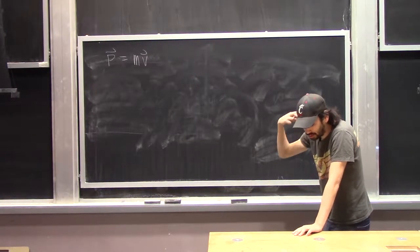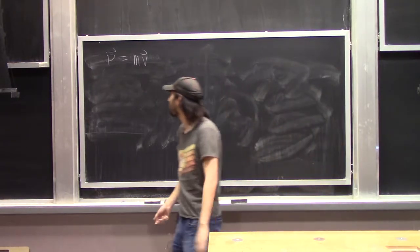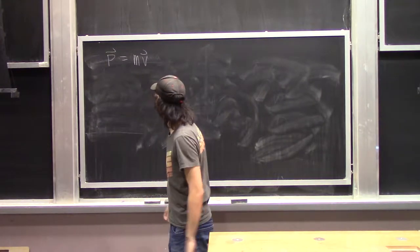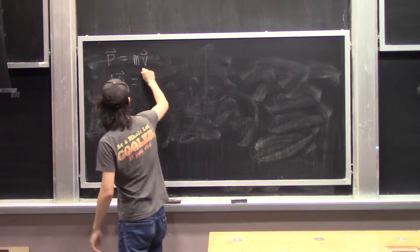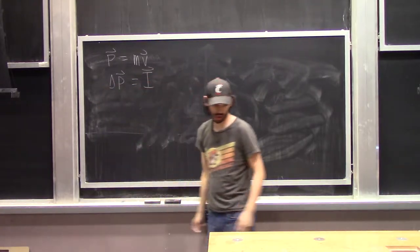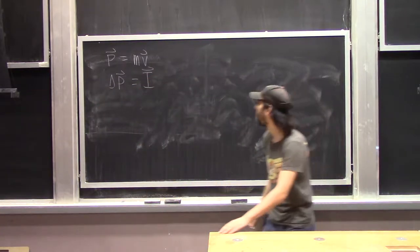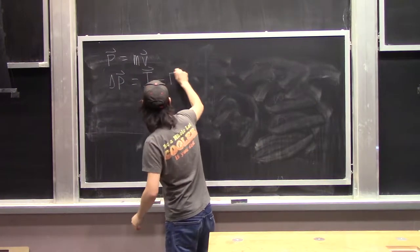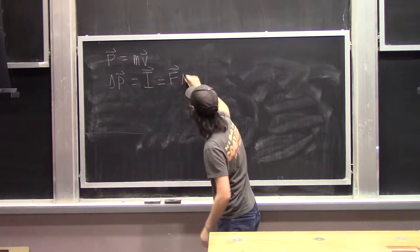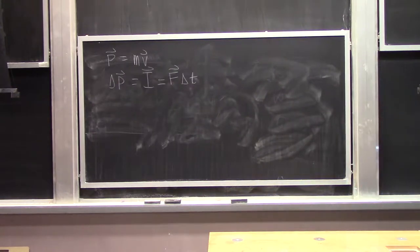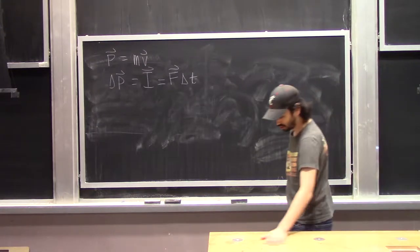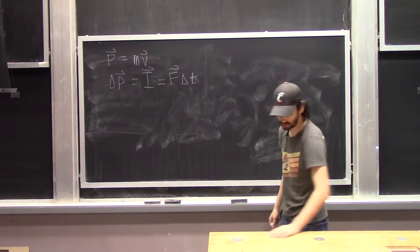An object can acquire momentum if a force is applied to it. The change in momentum, which is defined as the impulse and given the letter capital I, is equal to the force applied to the object times the time over which that force is applied. In defining momentum, we look at situations involving different types of collisions.